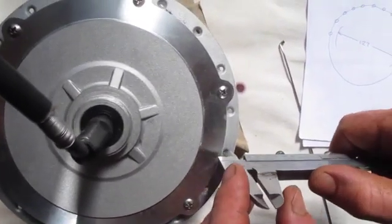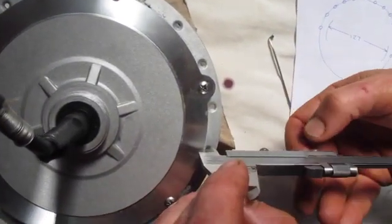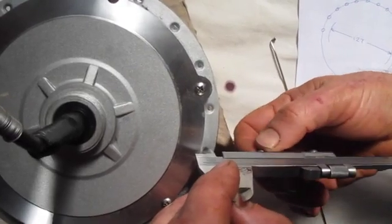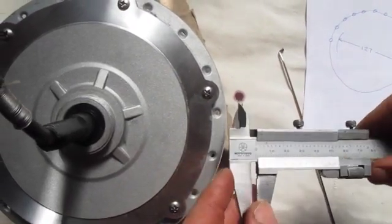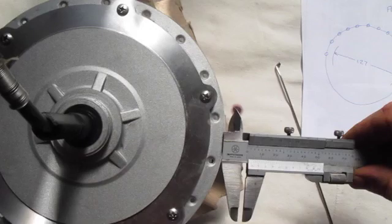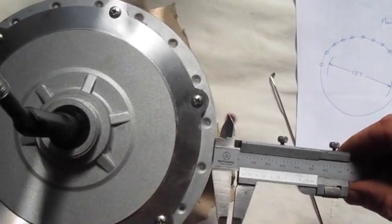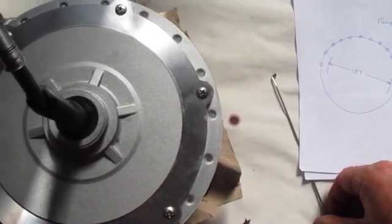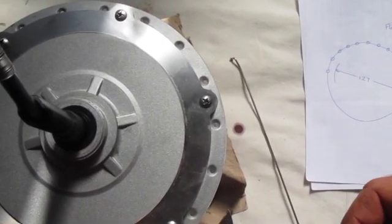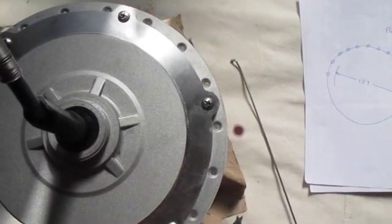Now in all these Bafang hubs, in my experience, the diameter of those holes is 3.2 millimeters, and this one's the same. So that's quite big when you're using two millimeter spokes, and we'll get to what we do about that later on.